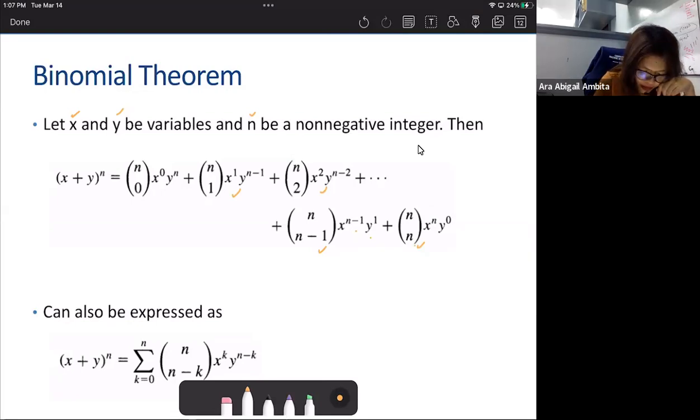So you can think of it like we have x plus y, and depending on the n, that will be the number of boxes that we have. So assuming that n is equal to 3, so that will be equivalent to x plus y raised to 3. This will be equivalent to x plus y times x plus y times x plus y. So we have three boxes.